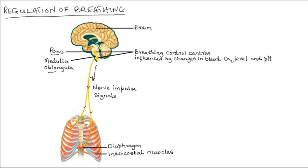However, during vigorous physical activity, the concentration of carbon dioxide increases in the body tissues beyond the normal level. As a result, more carbon dioxide diffuses into the blood and reaches the medulla oblongata and the pons.